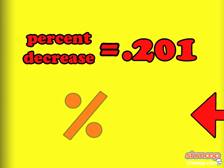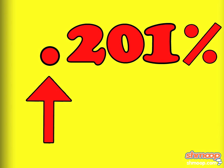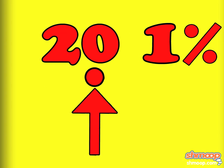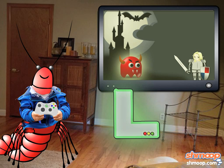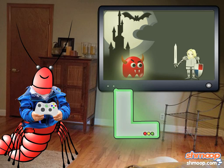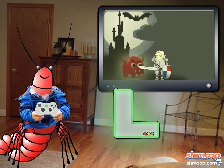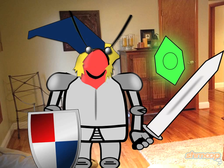That gives us 0.201. But we're looking for a percent. To convert it to a percent, just move the decimal point over two places to the right. So the percent decrease equals 20.1%. Awesome. Despite Larry's lack of opposable thumbs, he can finally claw his way to beating The Legend of Zelda. Larry's math skills will be just fine, but we're still concerned about how he makes a living.